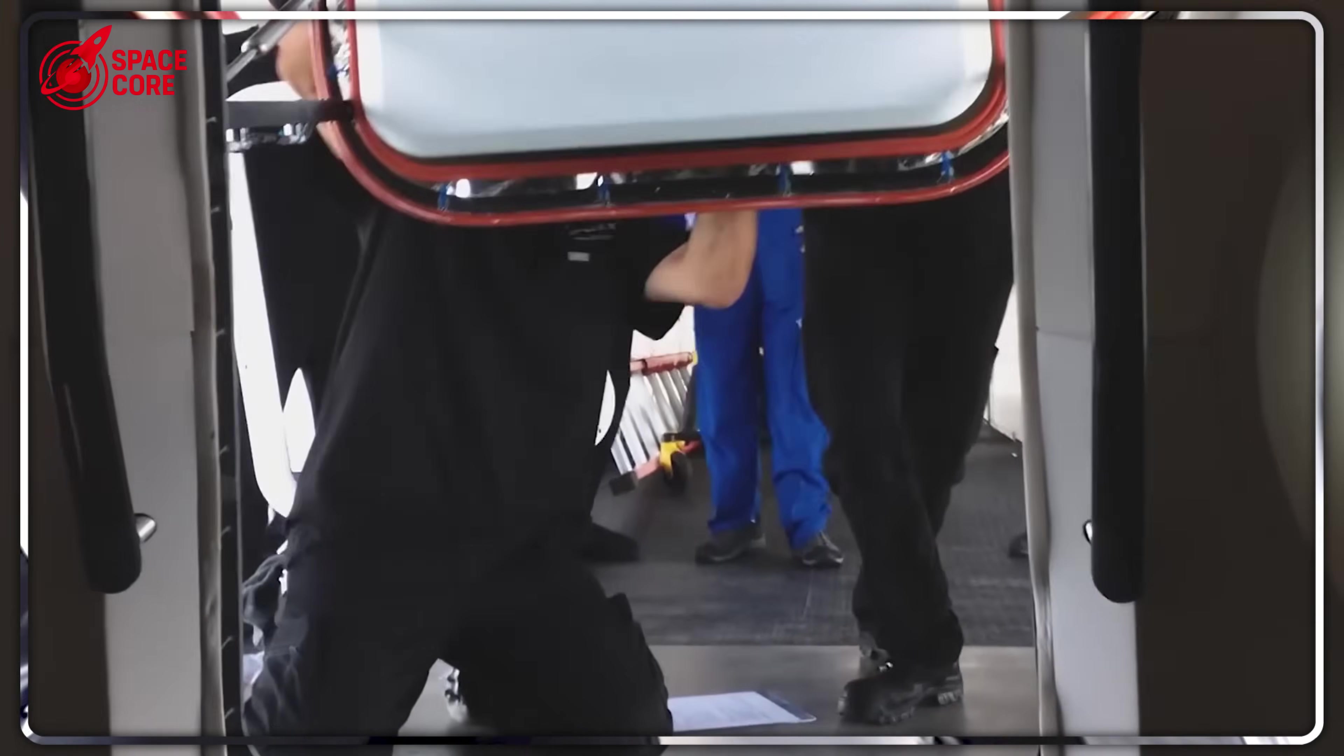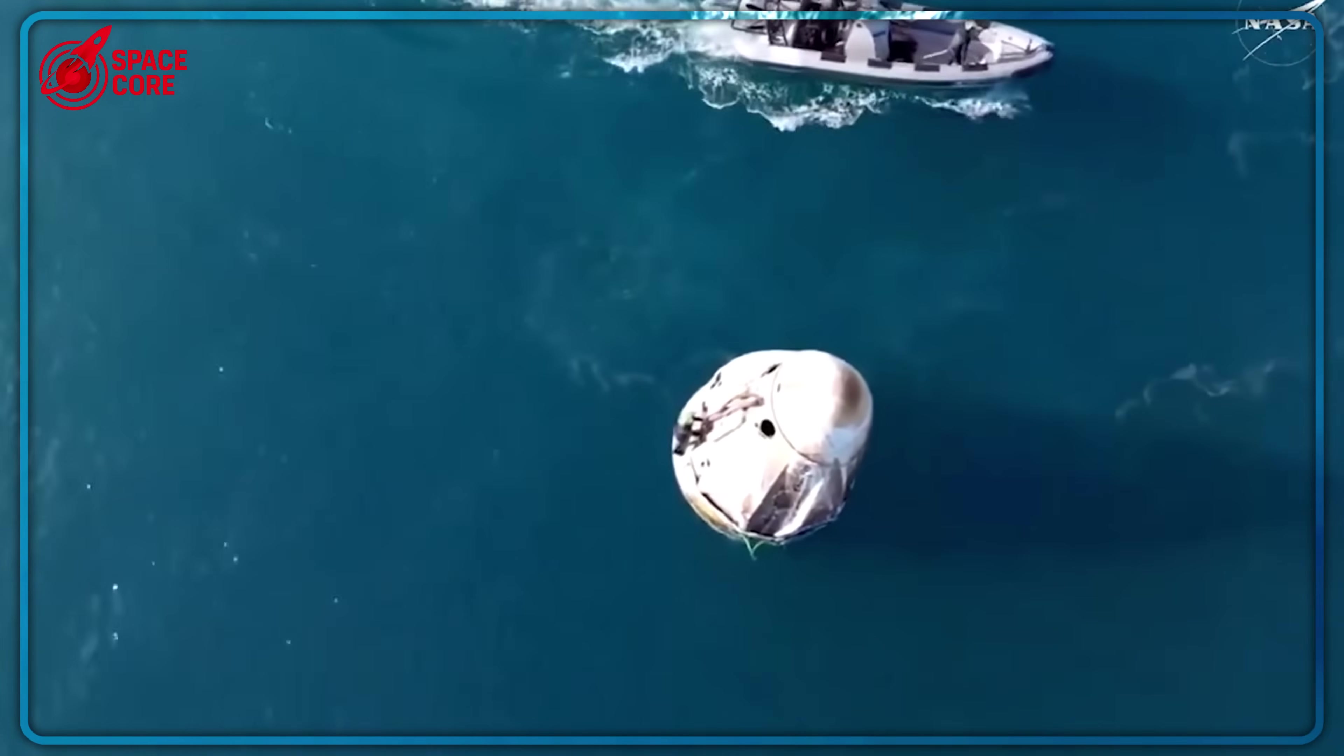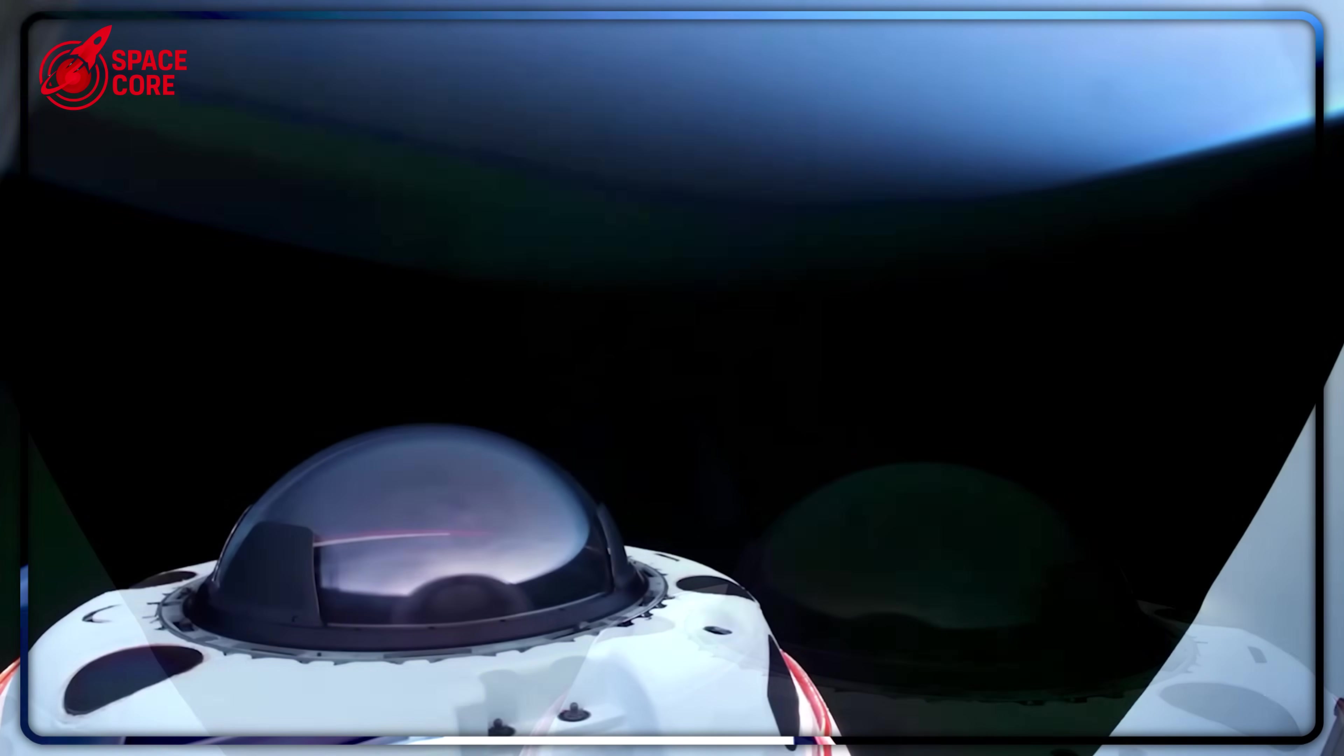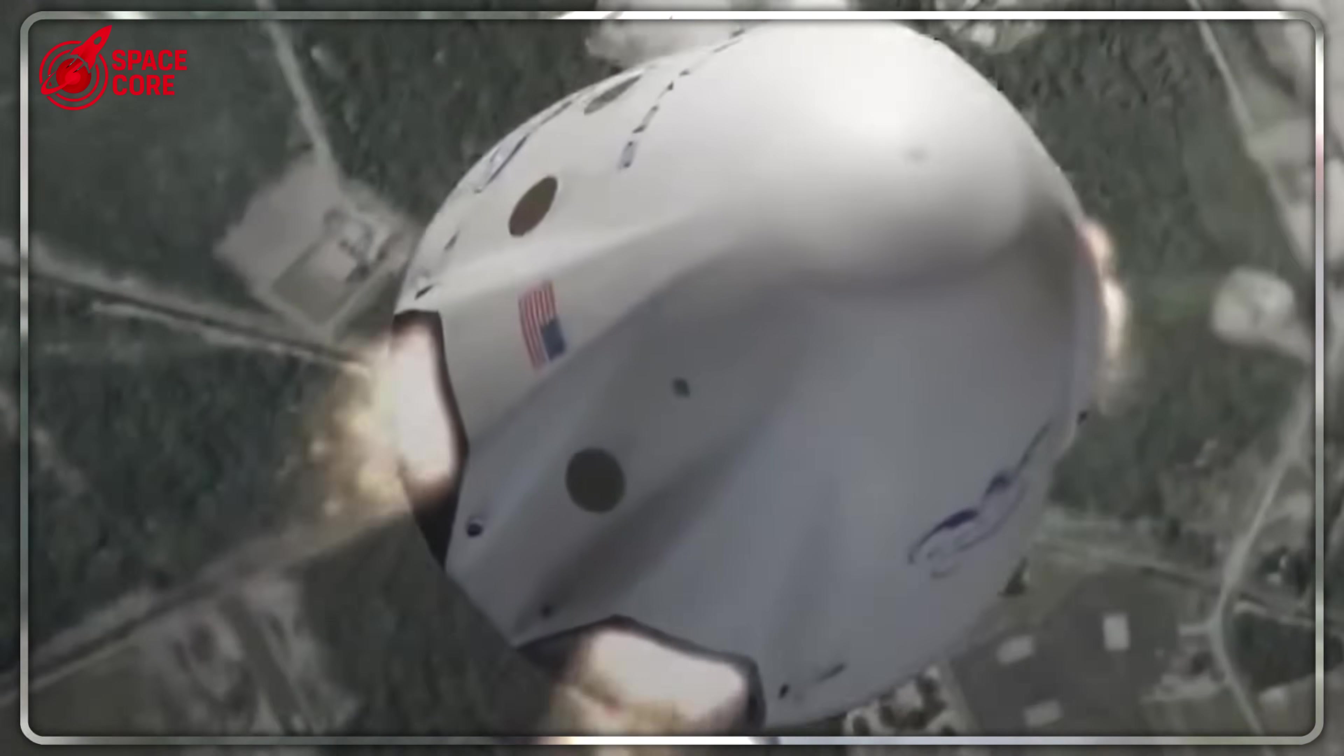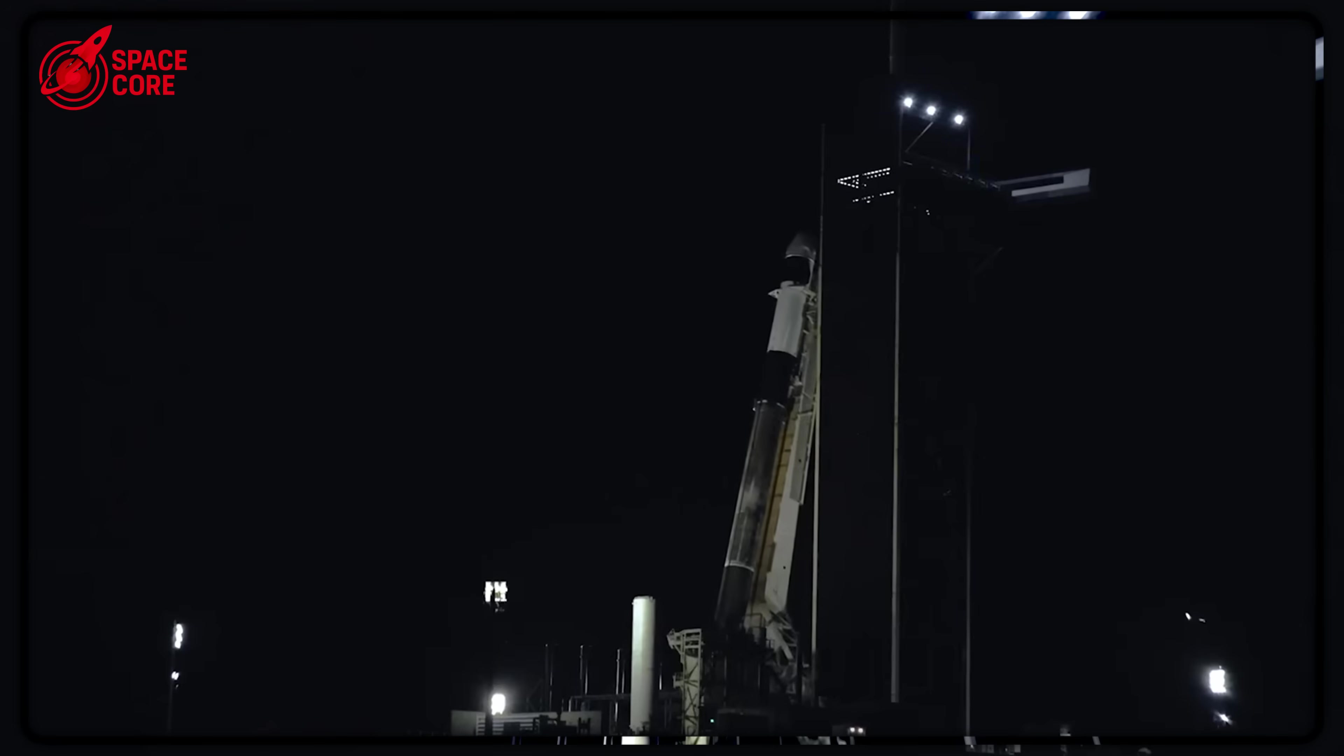Mars doesn't have oceans. More critically, Mars has virtually no atmosphere. Just 1% of Earth's density. Those beautiful parachutes that worked so perfectly on Earth? Completely worthless on Mars. Every water landing was proof that SpaceX was still trapped in 1960s Apollo technology while the clock ticked toward planetary alignment windows that only open every 26 months.